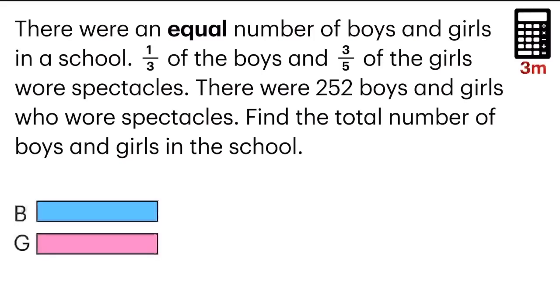Now they say, one third of the boys wore spectacles. So I'm going to chop this into three parts, because the denominator is the total number of units. So three units, and one unit, which is the top numerator, wore spectacles.